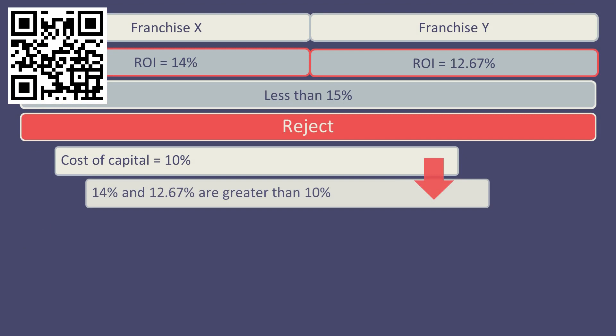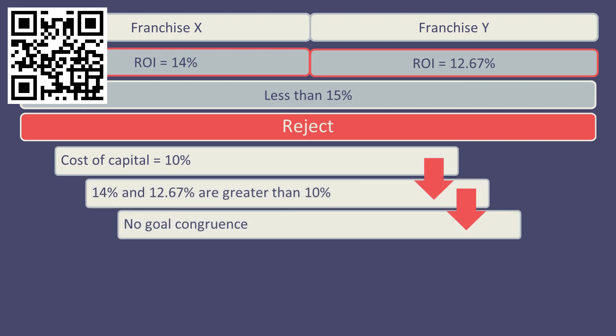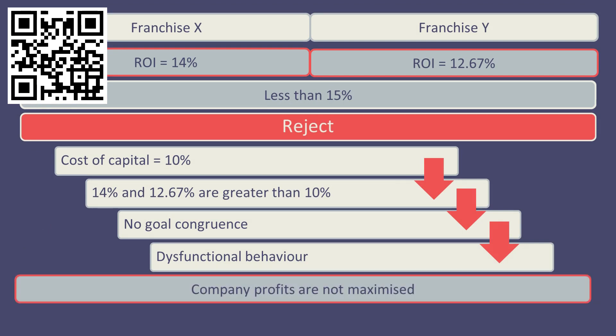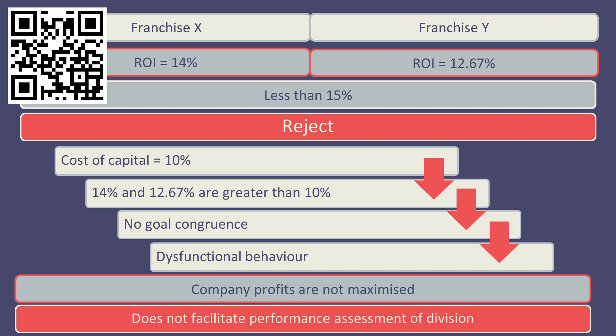Hence, the decisions of division X and division Y are not in the best interests of the company, meaning there is a lack of goal congruence between the divisions and the company. The behaviour of the divisions can be described as dysfunctional. Furthermore, if divisions are making decisions that are not advantageous to the overall performance of the company, then it is difficult to fairly assess the performance of that division.